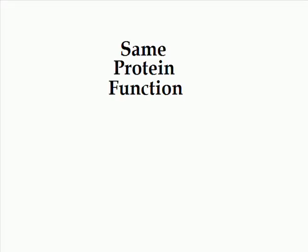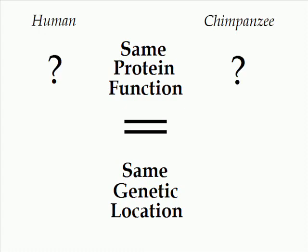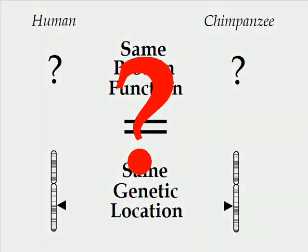Your third assertion — that ERVs occur in the same place in humans and chimps because proteins can only be functional in specific places — borders on absurd. Setting aside the fact that you have failed to demonstrate that all ERVs are functional, you're basically asserting that if a protein performs a similar function in two different species, it must lie at exactly the same locus in both species. Let's see if we can falsify this.